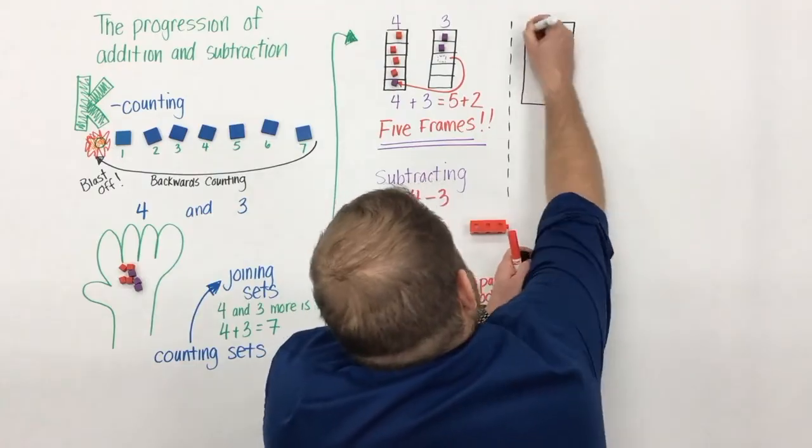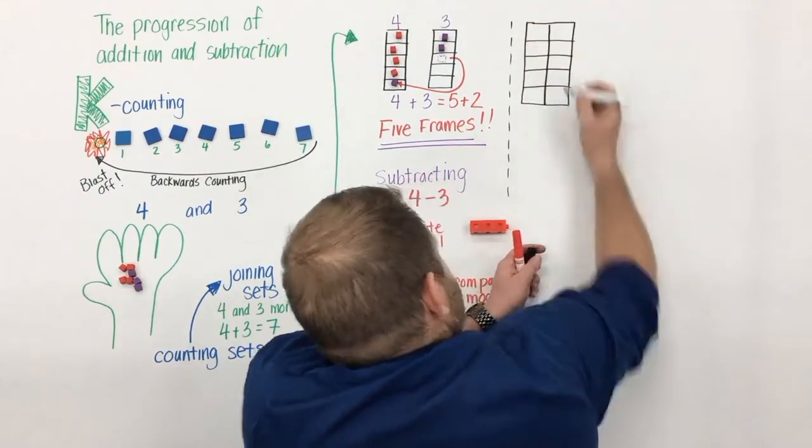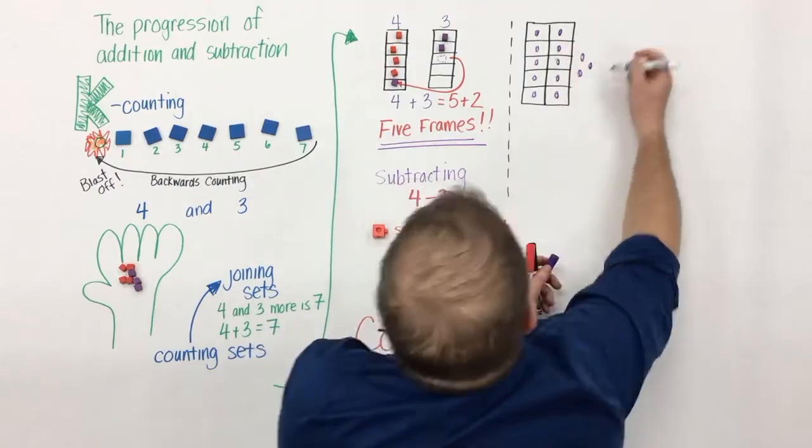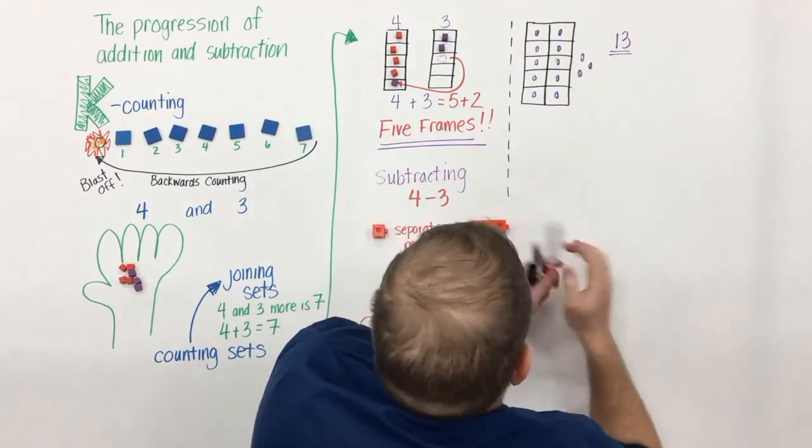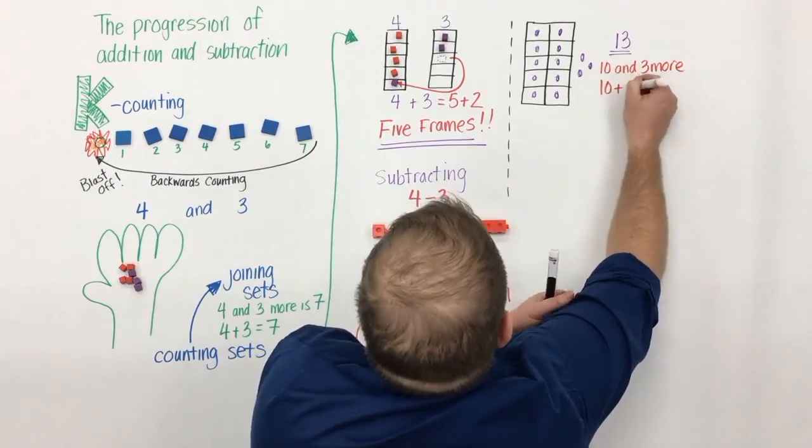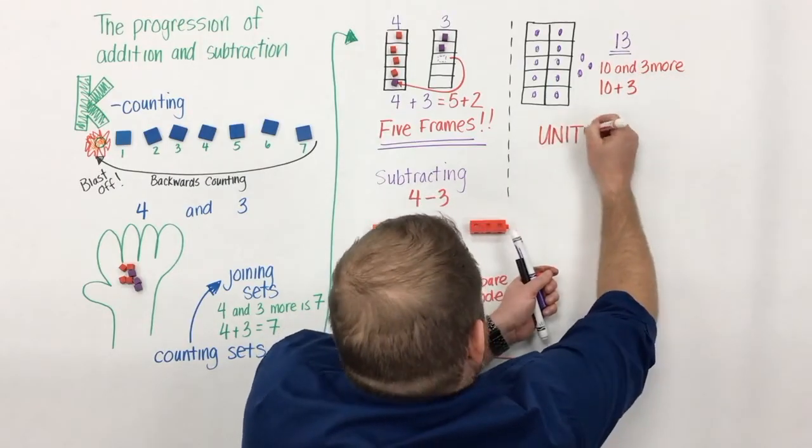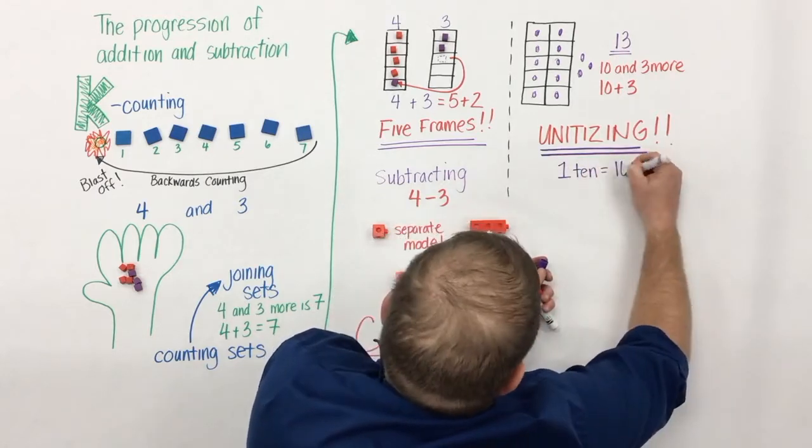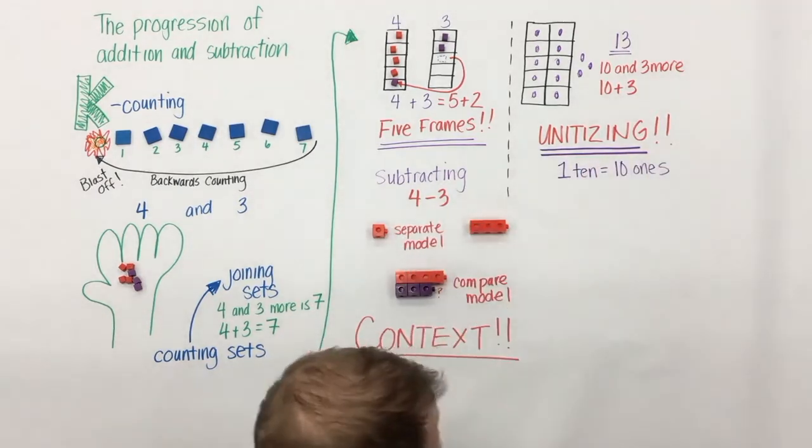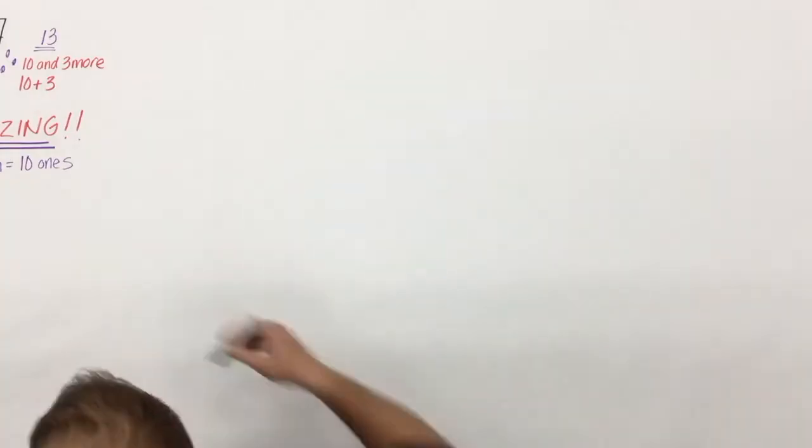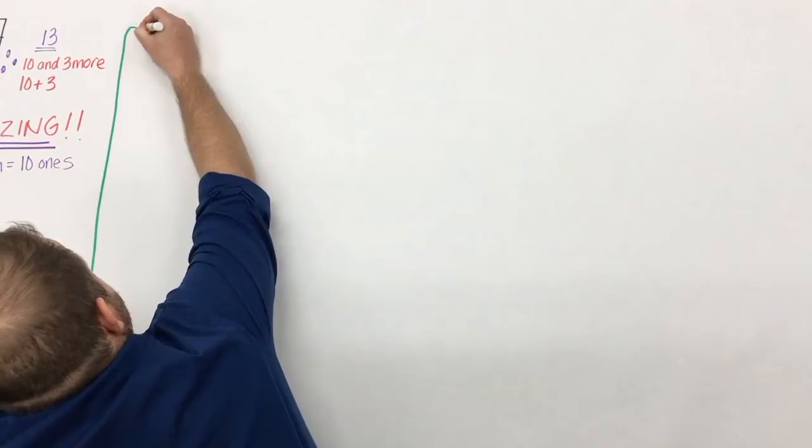So as students are working on addition and subtraction, they're simultaneously working on this understanding of counting and collecting and grouping things in 10. So here, 13 could be seen and should be seen as 10 and three more, or 10 plus three. It's here that this whole idea of unitizing is introduced. It's massive, and we need to make sure that students don't leave kindergarten and first grade without this understanding conceptually.